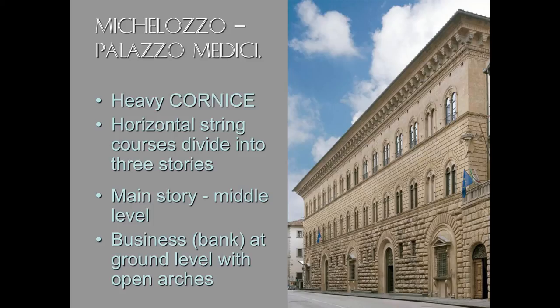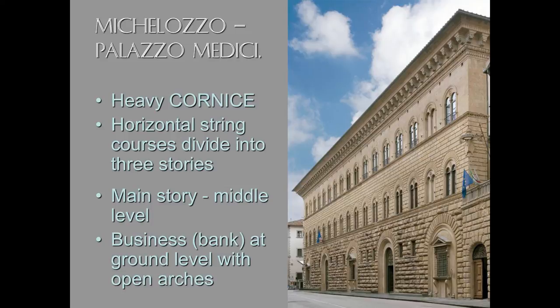The building became a more private household and was eventually sold to the Riccardi. You can see vertically three stories topped by a very heavy cornice that punctuates the top of the building. A horizontal string course or molding divides the building into three sections: the business section at the bottom, the Piano Nobile at the middle level, and the third story above.